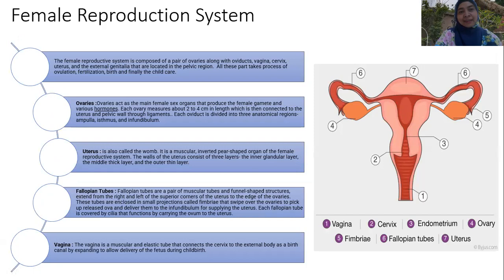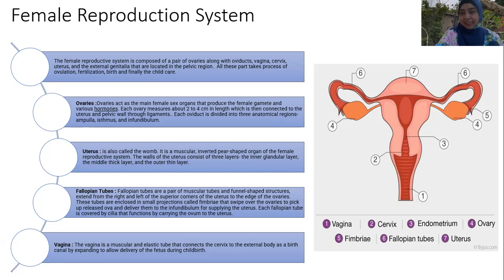The female reproductive system is the most closely related system to our life tasks as midwives. It is composed of a pair of ovaries, fallopian tubes, vagina, cervix, uterus, and external genitalia located in the pelvic region. During pregnancy, the uterus moves upward from the pelvic region into the abdomen. All these parts take part in ovulation, fertilization, and childbirth.